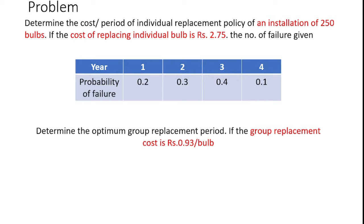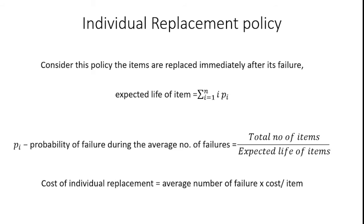The time period data may vary — it could be a year, week, or day depending on your consideration. Also, determine the optimum group replacement period if the group replacement cost is Rs. 0.93 per bulb. Let's see how to solve the problem using the individual replacement policy.